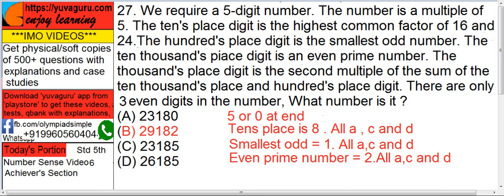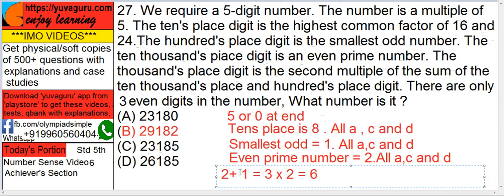Next condition: The thousand's place digit is the second multiple of the sum of ten thousand's place and hundred's place digit. It means whatever is there in hundred's place and ten thousand's place, add these two and second multiple means multiply by 2 then. So adding 2 and 1 we get 3. 3 multiplied by 2, that is 6. 2 plus 1 equals 3, and this 3 multiplied by 2, second multiple equals 6. Now check where is 6. So D is the answer.